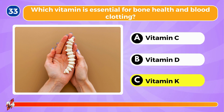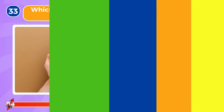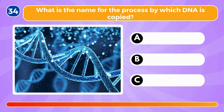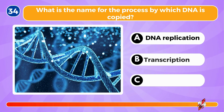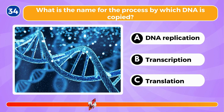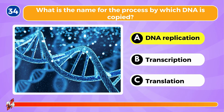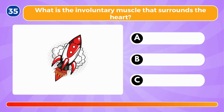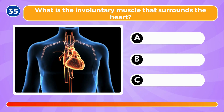Which vitamin is essential for bone health and blood clotting? It's vitamin K. What is the name for the process by which DNA is copied? The process is DNA replication.